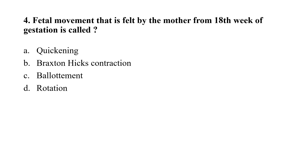Question number 4: Fetal movement felt by the mother from 18 weeks of gestation is called — option A: quickening; option B: Braxton Hicks contraction; option C: ballotment; option D: rotation. The correct option is A, quickening. Braxton Hicks contraction is uterine contraction without cervical dilation, and ballotment is the method of diagnosing pregnancy in which the uterus is pushed with a finger to feel whether the fetus moves away or returns.